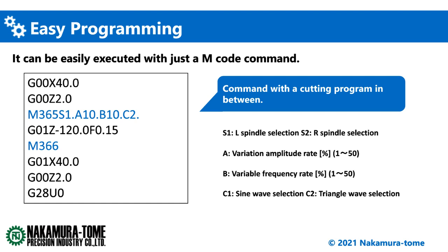B is the variation frequency rate, which determines how often the speed should be varied. Basically, you can set this at 10 and adjust it according to the result. S1 is the selection of the waveform: S1 is for sine wave and S2 is for triangle wave. We recommend triangle wave for this. And please don't forget to insert the cancel command.